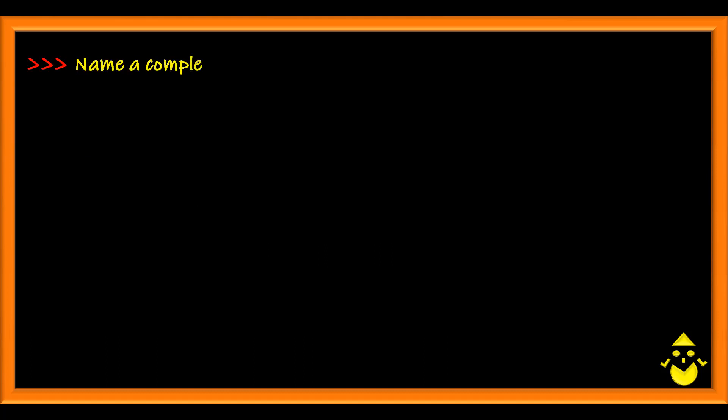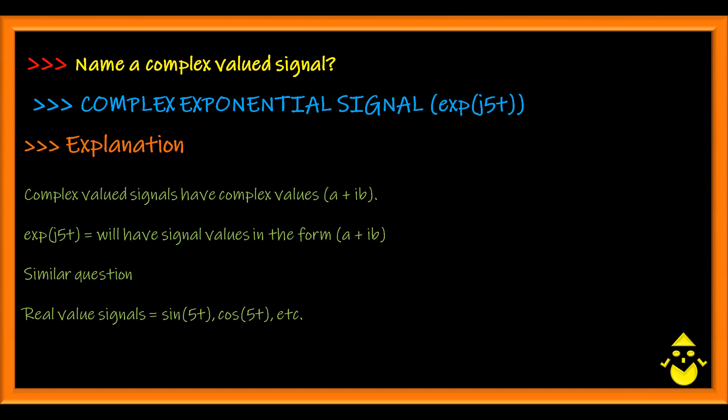Name a complex valued signal. A complex valued signal must have values of the form a plus ib. A typical example is complex exponential signal, exponential of j5t.